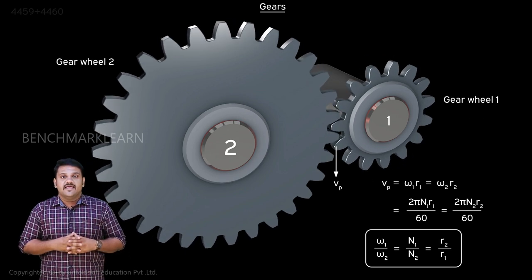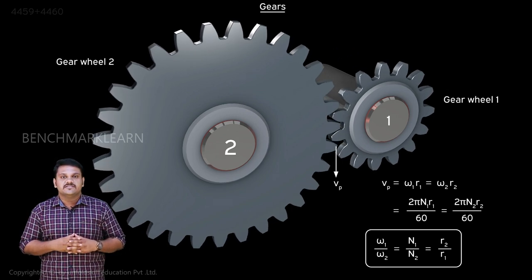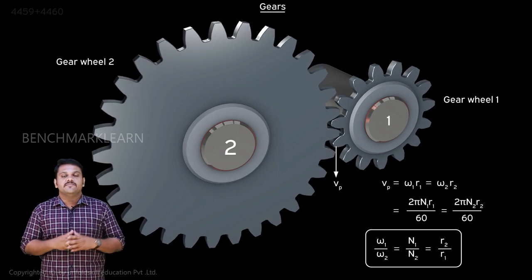We can say that a gear drive is equivalent to two friction discs in contact where no slip is allowed.